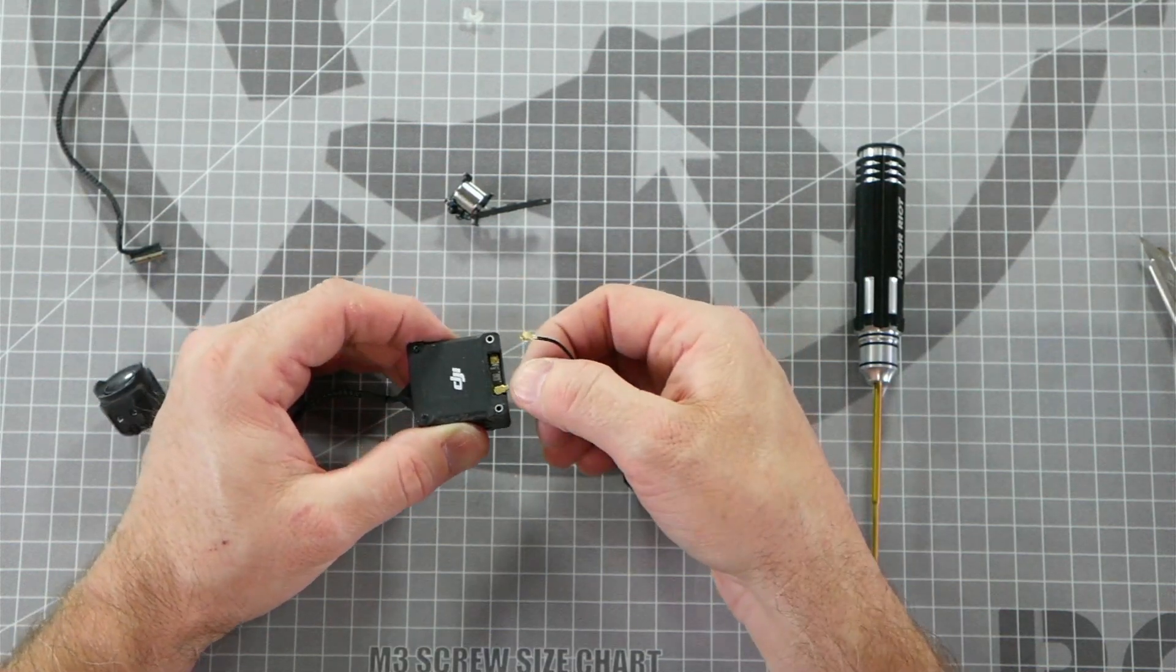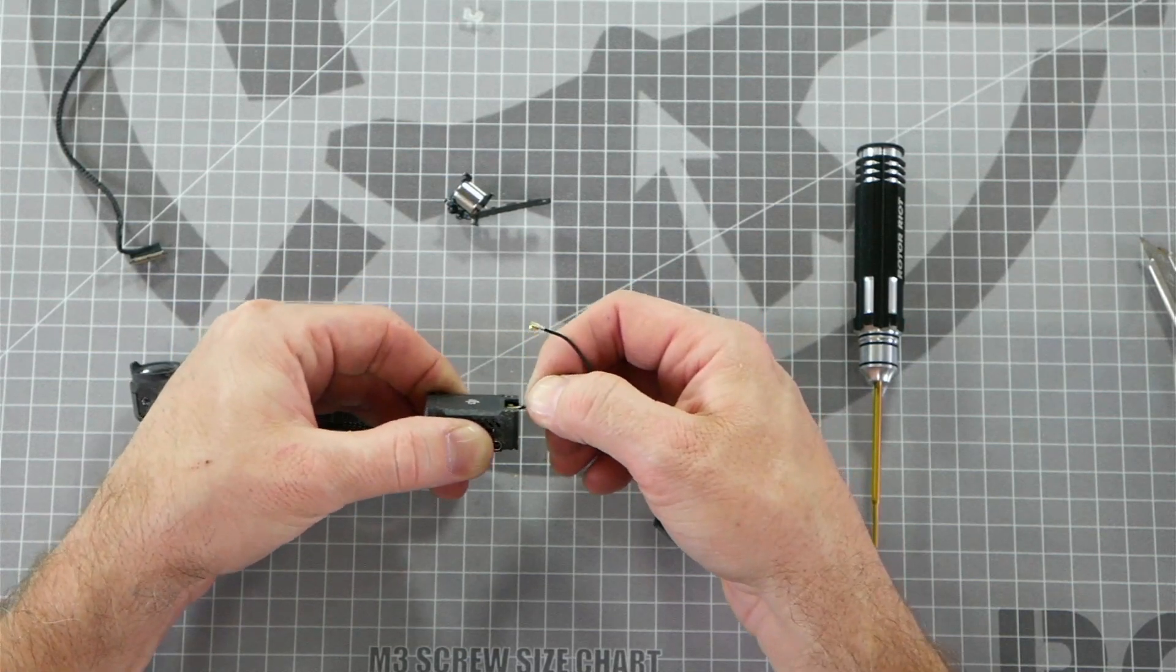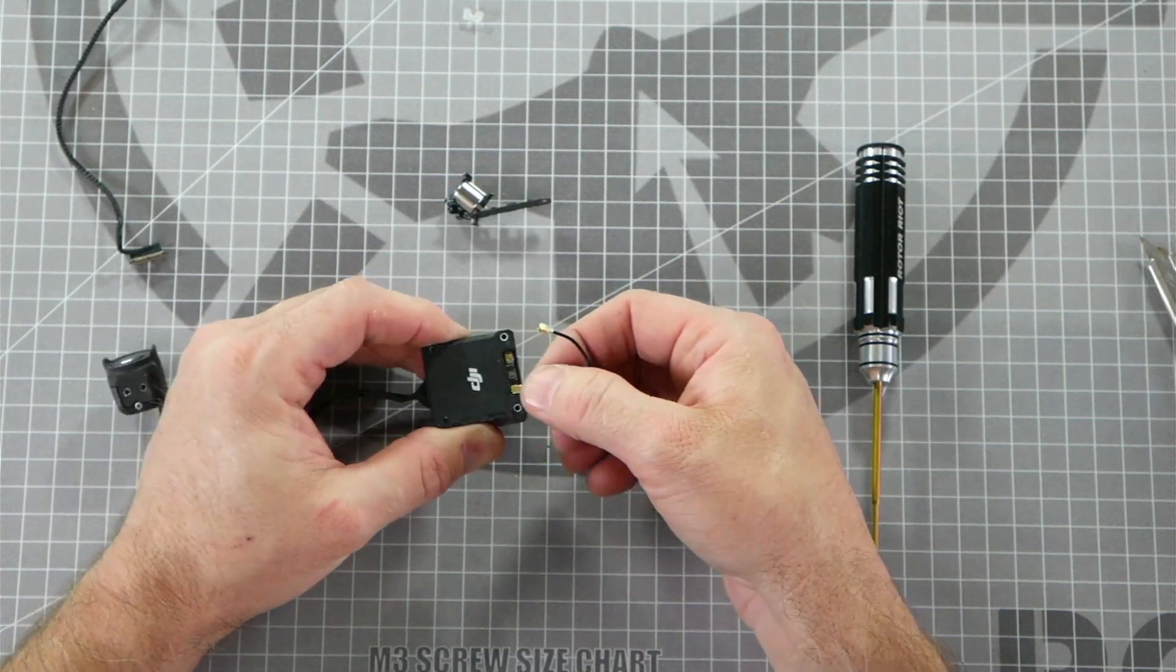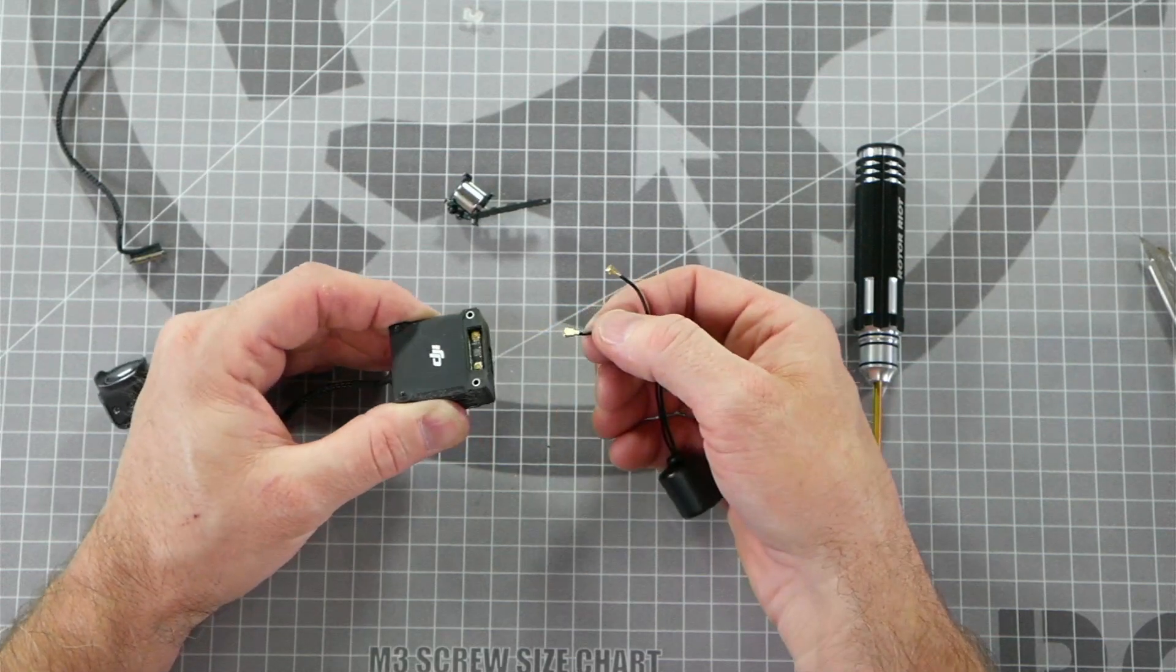Let's do the same thing for the other cable on the other side. Just gently rock it back and forth like this and that'll loosen it up and allow it to pop off without damaging the UFL connector underneath.